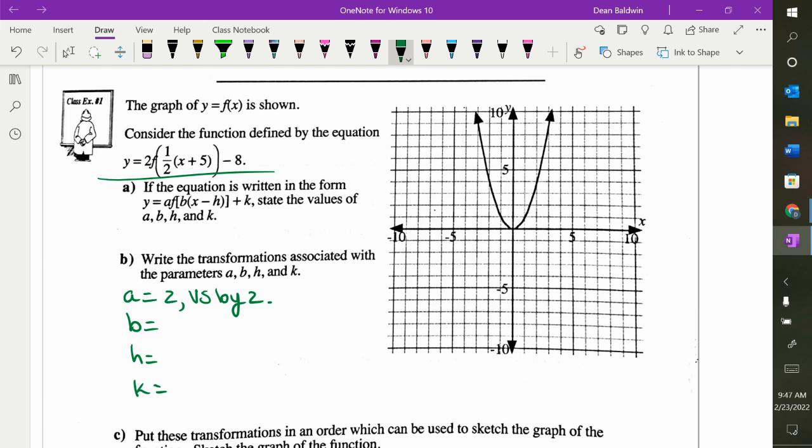What is my B? What's the B value is what's in the function. It's one half. What does that do to the function? Horizontal stretch by two.